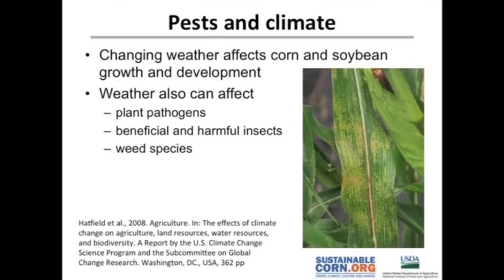The gist of it is going to be talking about changing weather. The thrust of most of the work being done here is looking at the effects of climate and production practices on corn and soybean, but also weather and production practices can affect insects, diseases, and weeds as well. There are going to be three main take-home messages from this talk.